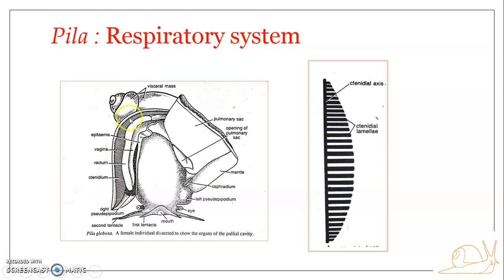In this figure, you can see the ctenidium — the gills — which help in aquatic respiration, and the pulmonary sac in the pulmonary chamber, which helps in aerial respiration. Now we will look into the structure of the ctenidium. The ctenidium is a monopectinate gill — comb-like — and it is situated on the right side of the branchial chamber.